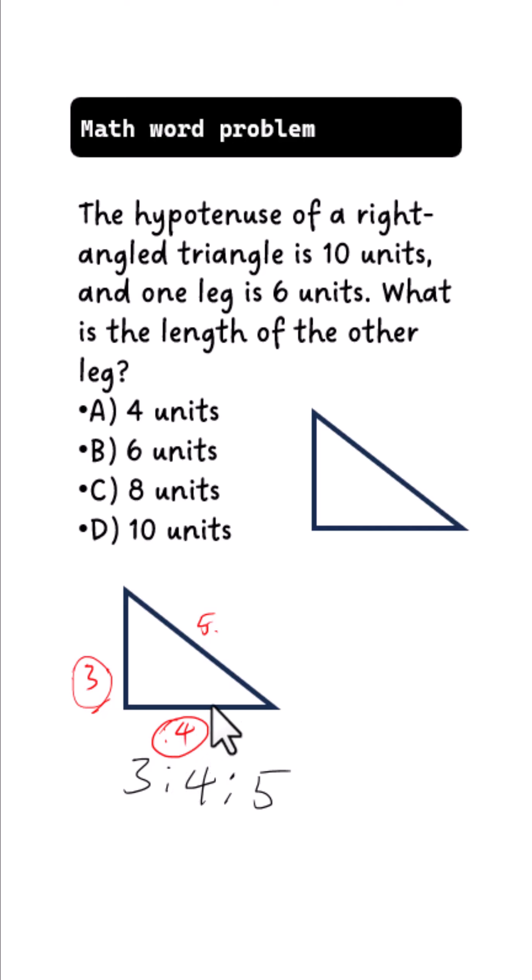So the way you apply this is, hypotenuse is the 5, and the other two legs are 3 and 4. So when you have two of these, you can simply use that ratio to get the other one.